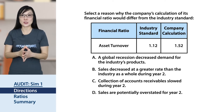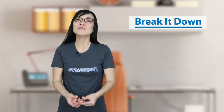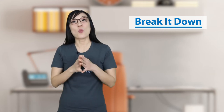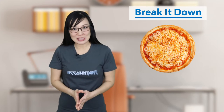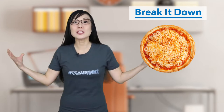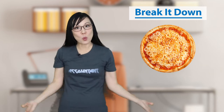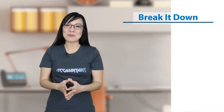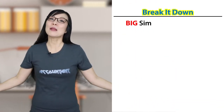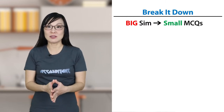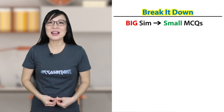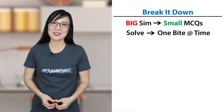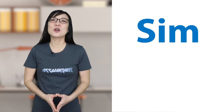Don't look at this as one big sim, which can be intimidating. Break it down — think of each ratio as a short multiple-choice question. As you solve each ratio, break it down further and analyze one step at a time. It's like eating a pizza: you take one slice and eat it one bite at a time. Take that big problem, break it down to smaller questions, and solve one bite at a time. You can do this — let's show this sim who's boss.